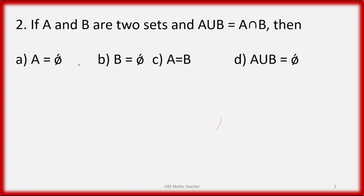Let's move to question number two. If A and B are two sets and A union B equals A intersection B, then what is the answer? If A union B equals B, that gives A. If B union A equals A, that gives B. If A and B are equal, then A union B equals A intersection B. So the answer is A equal to B.